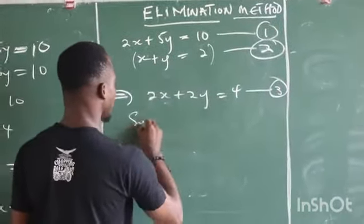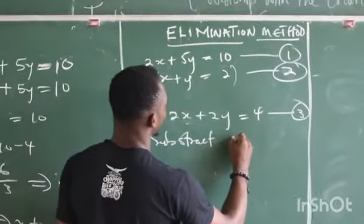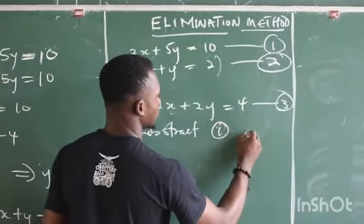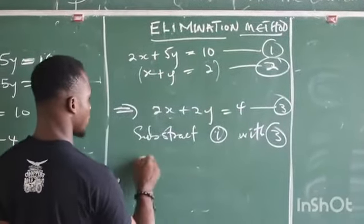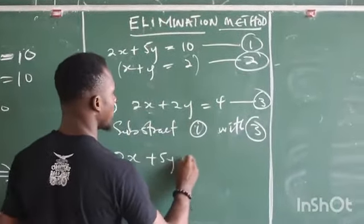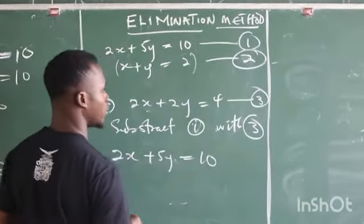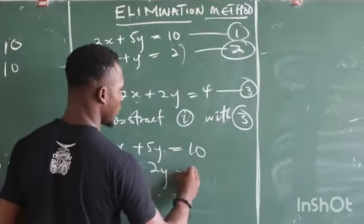What we are going to do is subtract equation 1 with equation 3. Equation 1 is 2x plus 5y equals 10 and equation 3 is 2x plus 2y equals 4.